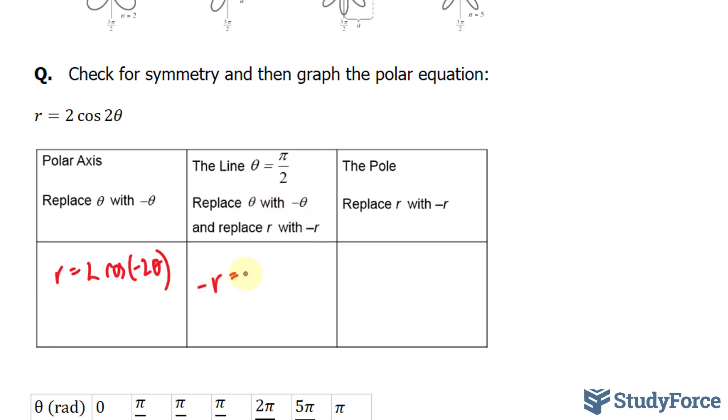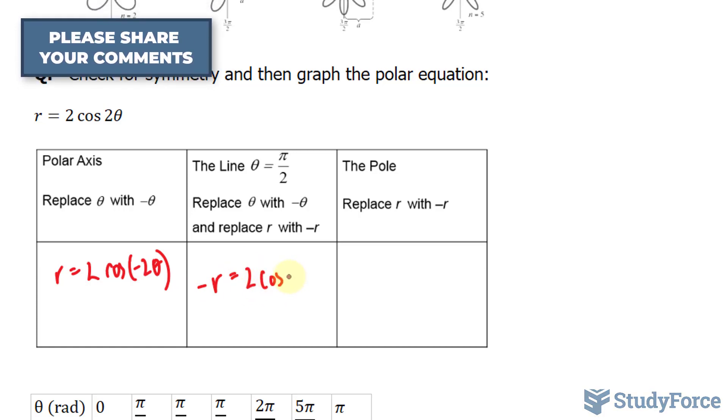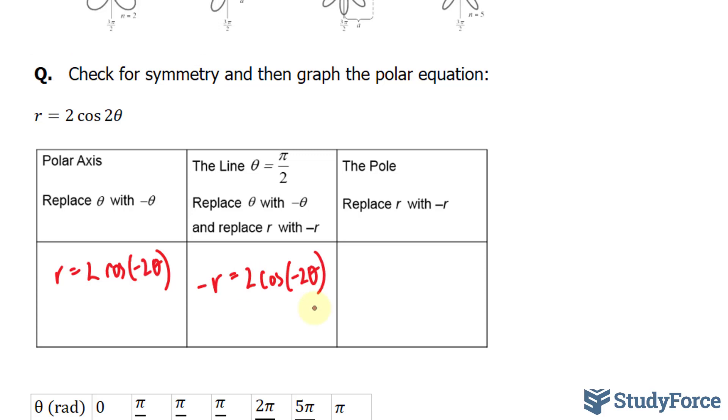So we have negative r equals 2 cosine negative 2 theta. We already discovered what happens here. The r doesn't change. Now, because the left side and the right side of this equation don't match, this fails the test, and because it fails the test, it is not symmetrical about theta equals pi over 2, or the y axis.